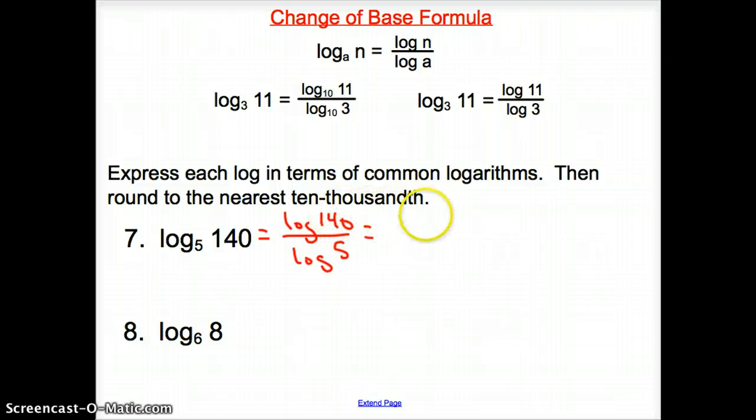Log of 140 equals 2.1462 and log of 5 is 0.6990. Divide the top by the bottom to get a final answer of 3.0704.